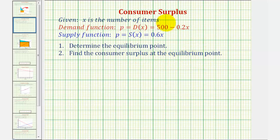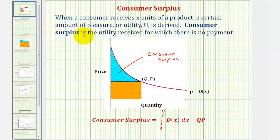Let's begin by reviewing consumer surplus. When a consumer receives x items of a product, a certain amount of pleasure or utility U is derived. The consumer surplus is the utility received for which there is no payment.